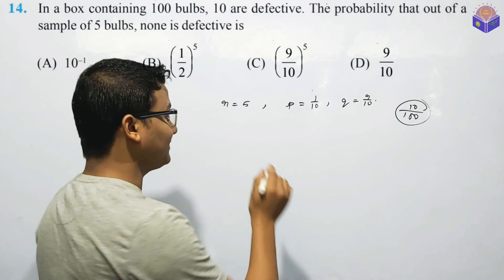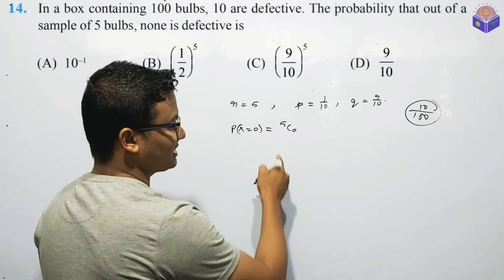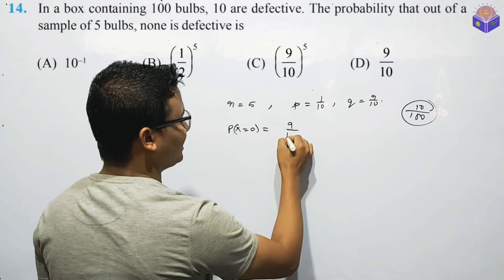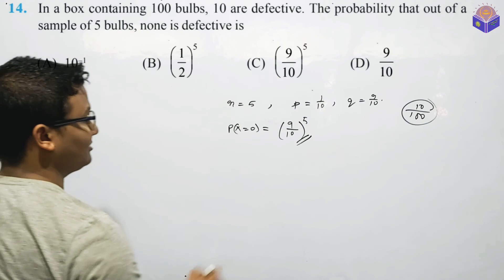This one is defective, meaning P of X is equal to 0. P of X equal to 5C0. 5C0 is equal to 1. Next, C is equal to 0. 9 to the power of 10, whole to the power of 5. This is equal to 0.